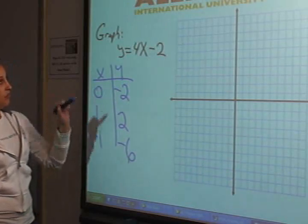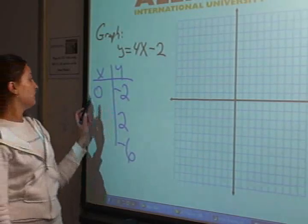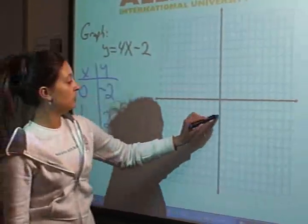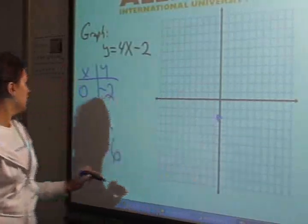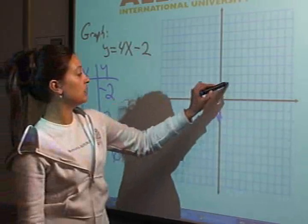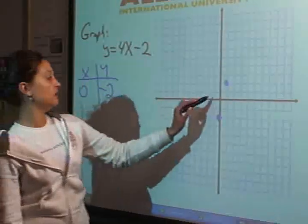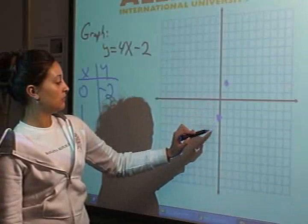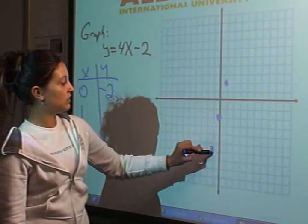So now we have enough points to graph on our line. If we do 0 and negative 2, that's going to be here. If we have 1 and 2, that's going to make it here. And if we have negative 1 and negative 6, that puts us here.